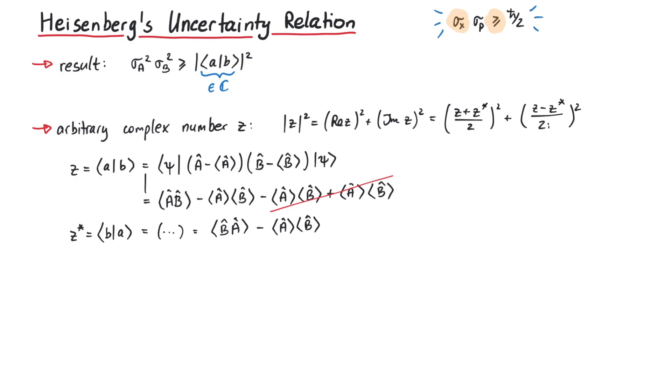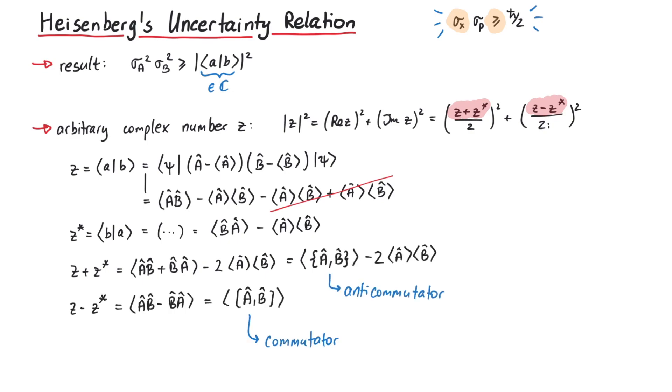If you recall the expression for the absolute square of z, we need the sum and the difference of z and its conjugate, which we can write in terms of commutators and anti-commutators. Returning to the product of the variances, we can now write them as being greater than or equal to the sum of those two terms that we just calculated.